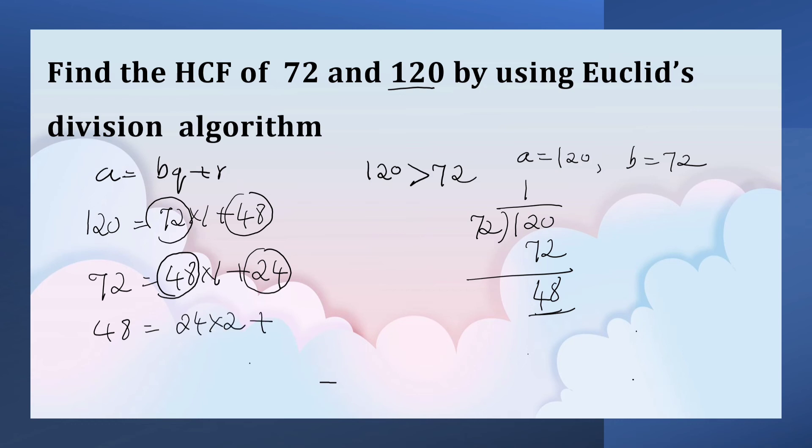Here remainder is 0. So HCF of 120 and 72 is 2, this number.